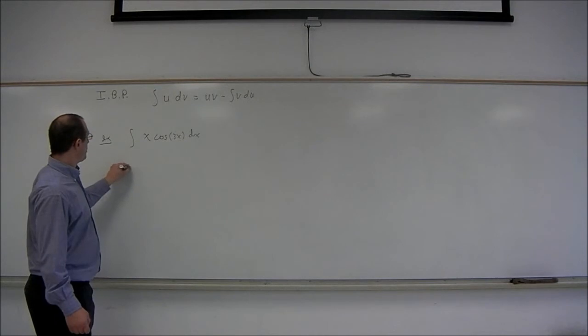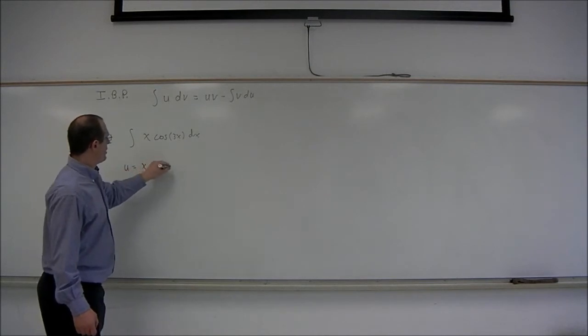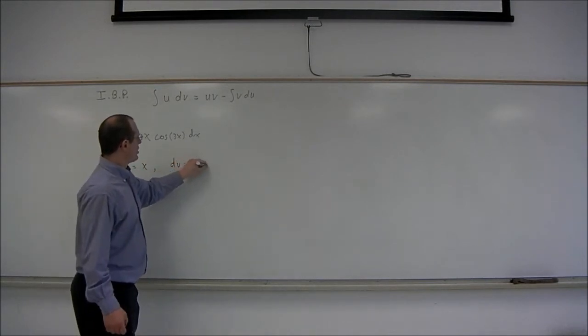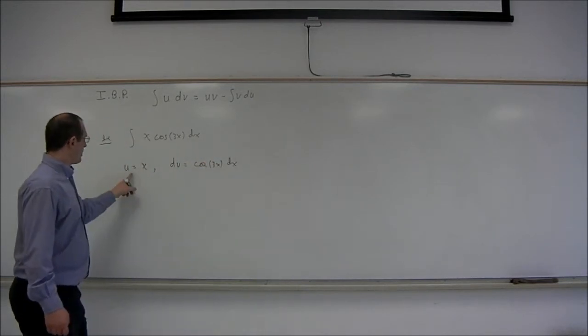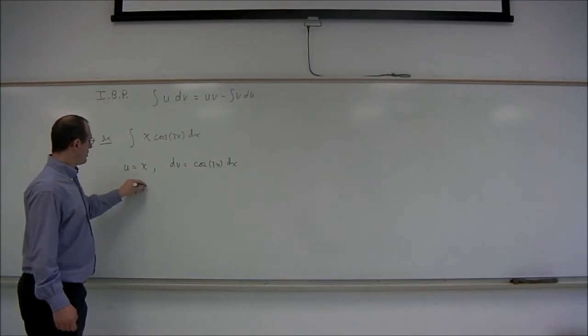So we'll choose u equals x, and dv equals cosine of 3x dx. Then du will equal dx.